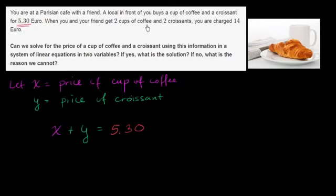Now, when you and your friend get two cups of coffee and two croissants, you're charged 14 euro. So what's an equation to describe this? So we should be charged 2 times the price of a cup of coffee, so it should be 2x. And then we should be charged 2 times the price of a croissant, so plus 2y. And the sum of these should be the total amount that we're charged. We've been charged 14 euro.